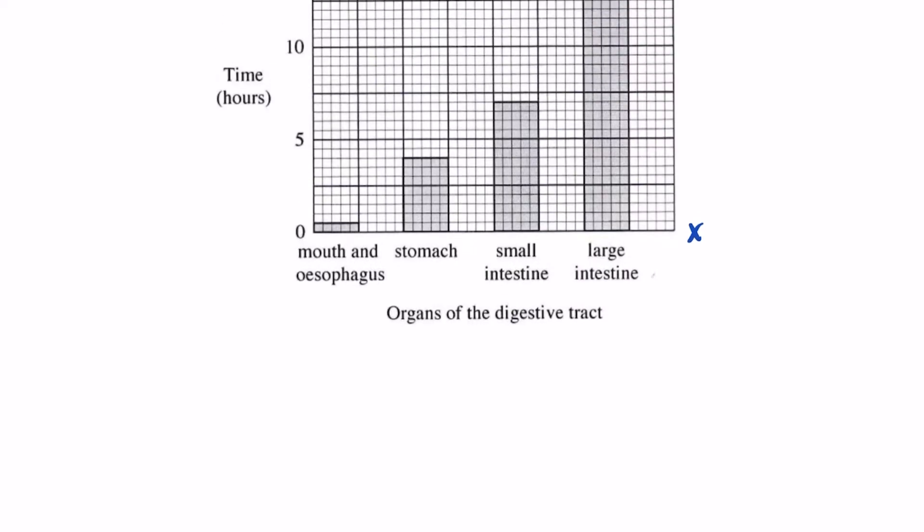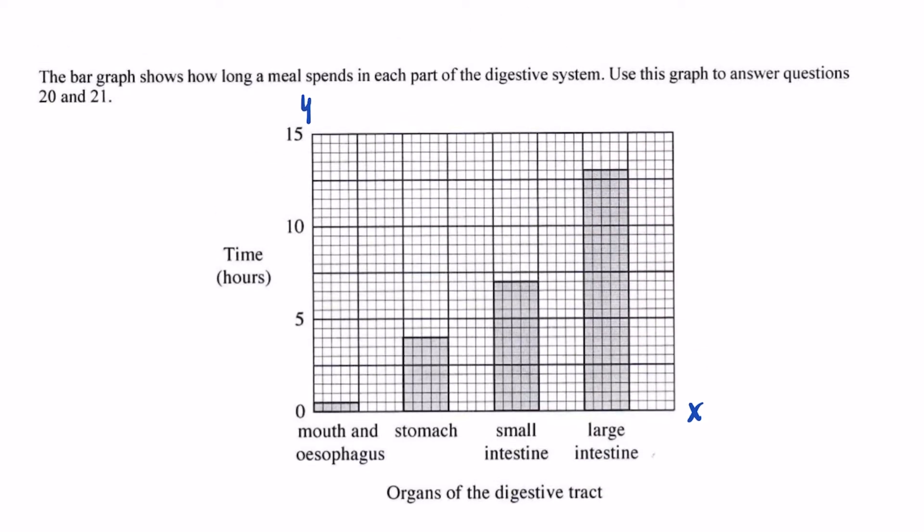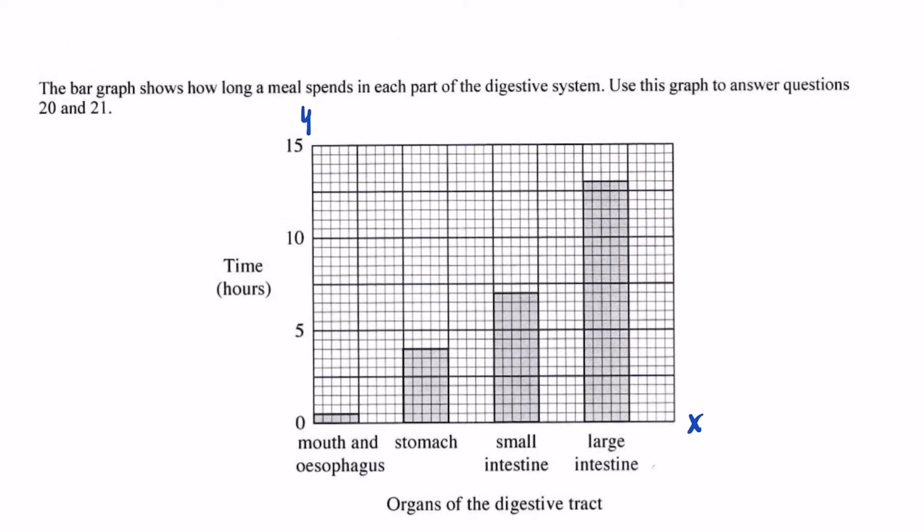So we have here time zero and then time five, which is five hours and then 10 hours and then 15 hours. Now, what we're going to have to do is figure out what each of these individual units of time represent. And we can do that by dividing five hours into the number of empty spaces that we have here. And once we do that, we get the number of minutes.